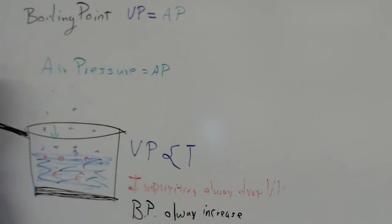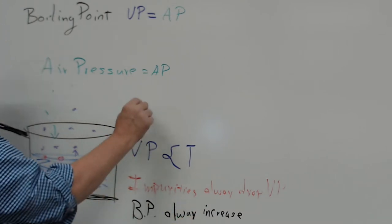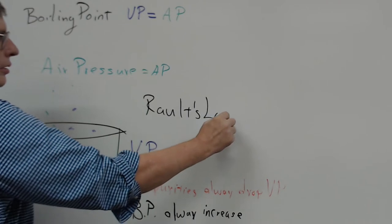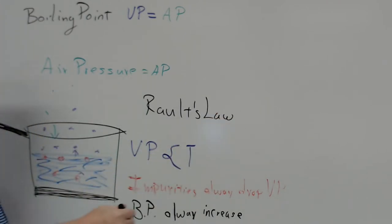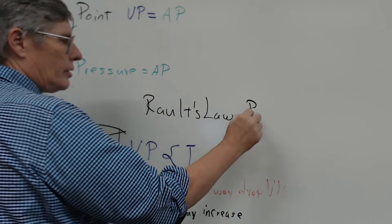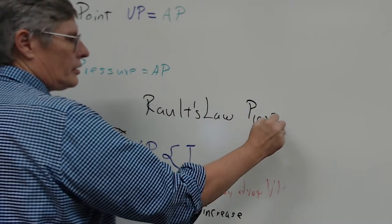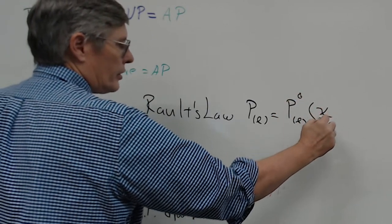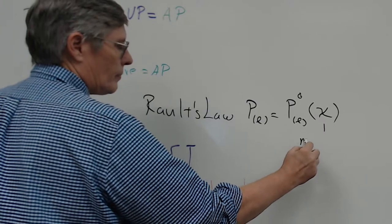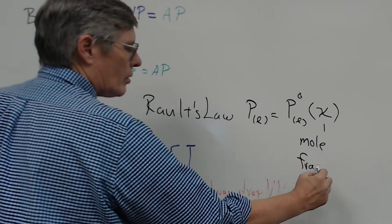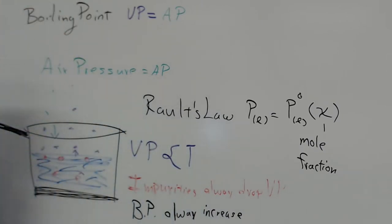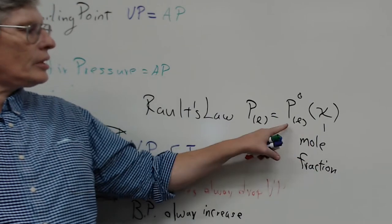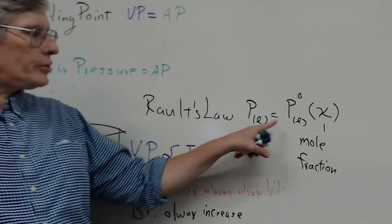This law is called Raoult's Law. Raoult's Law basically says that the pressure of a liquid that is observed is equal to the pressure when it's pure — this circle means pure — times how pure it is, called the mole fraction. As soon as a liquid becomes less pure, its mole fraction drops, and therefore its observed pressure drops from when it was pure.